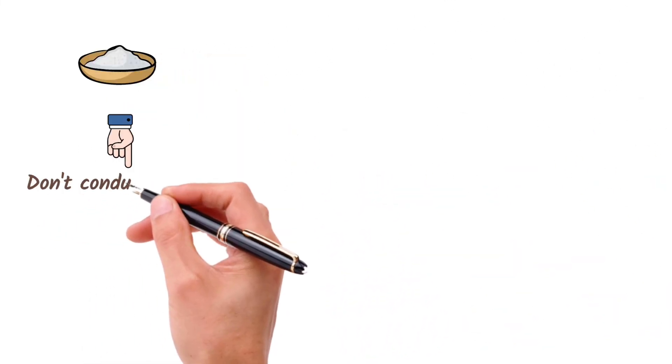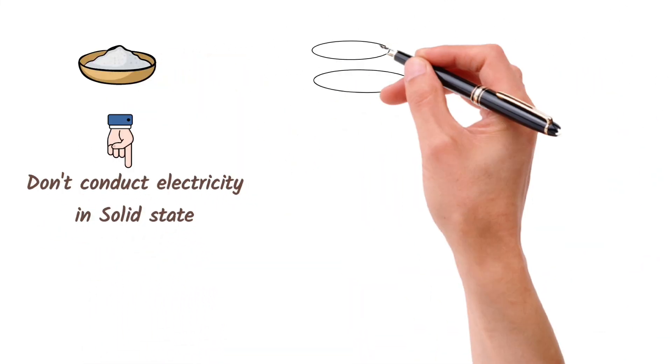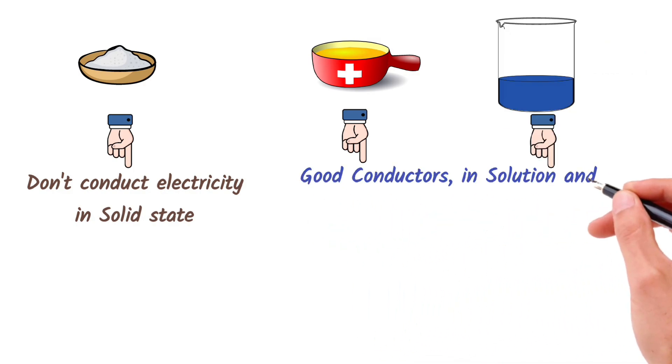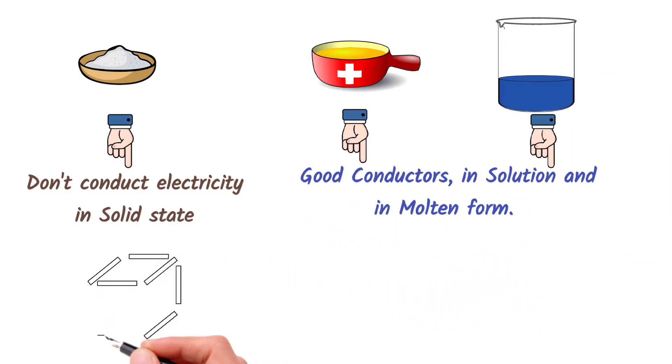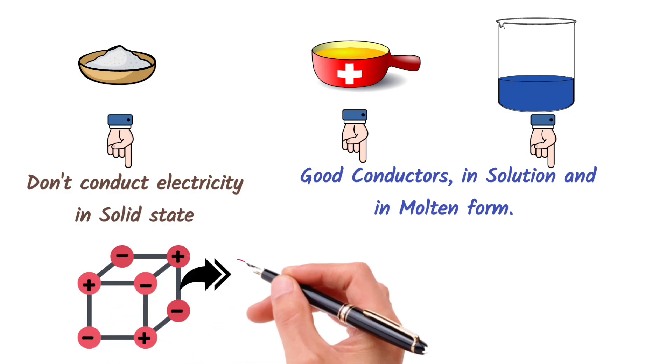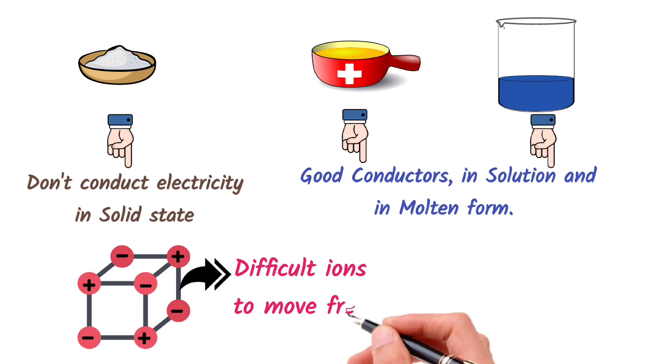Ionic compounds do not conduct electricity in solid state, but they are good conductors in solution and in molten form. In the solid state, ionic compounds have a fixed structure, and the ions are held together by strong electrostatic forces. These forces make it difficult for the ions to move freely, and carry electrical charge.